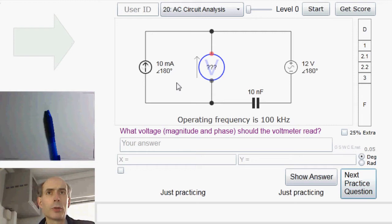First question, then. We have got a current source here, firing 10 mA up with a phase of 180 degrees, which you may notice is the same thing as firing 10 mA down with a phase of 0, since changing by 180 degrees means turning the signal upside down.